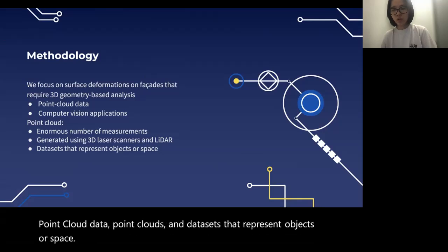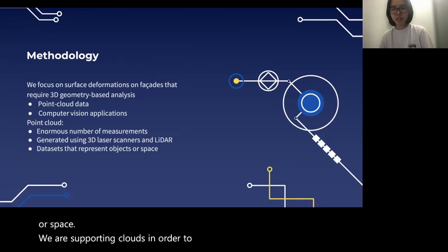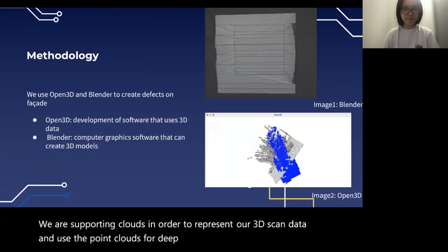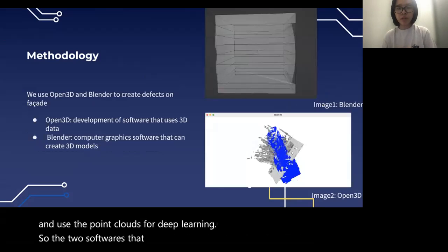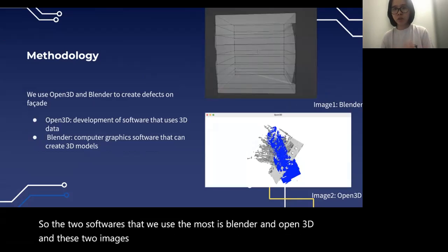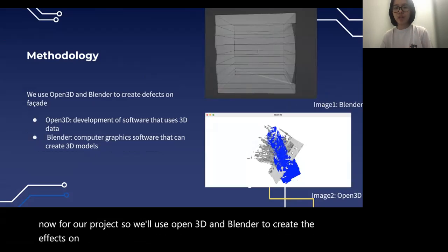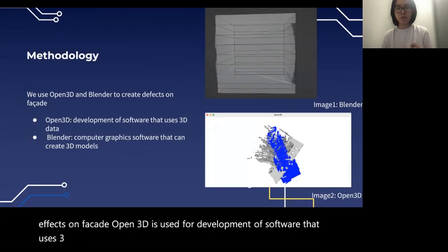We use point clouds to represent objects or space, and use them for deep learning on our 3D scan data. The two software tools we use the most are Blender and Open3D, and these two images are examples of what we're working on right now for our project. Open3D is used for development of software that uses 3D data, like our project which uses 3D data of facades.